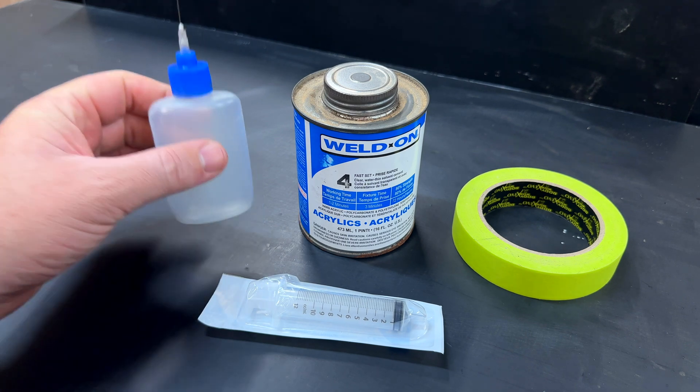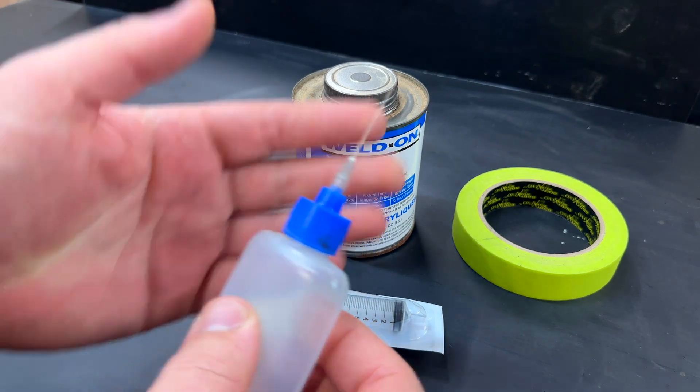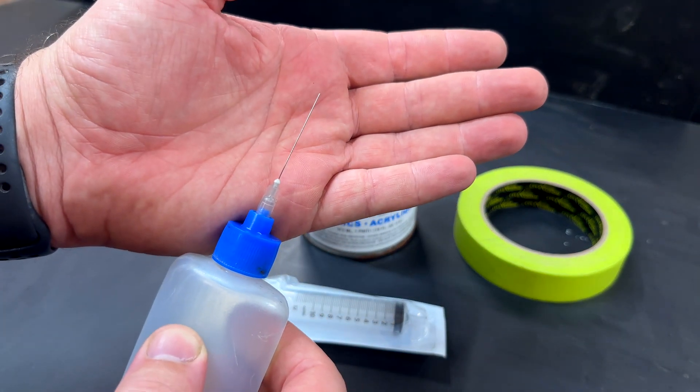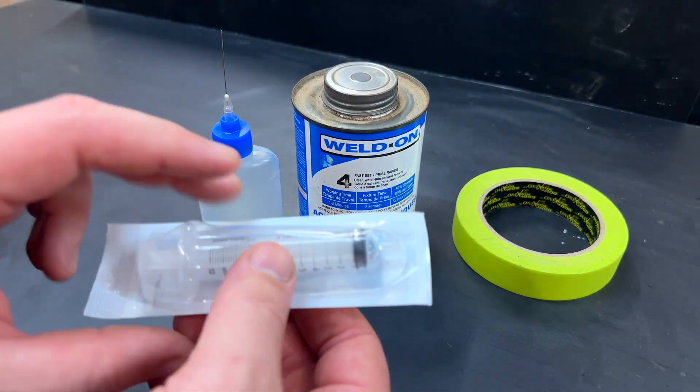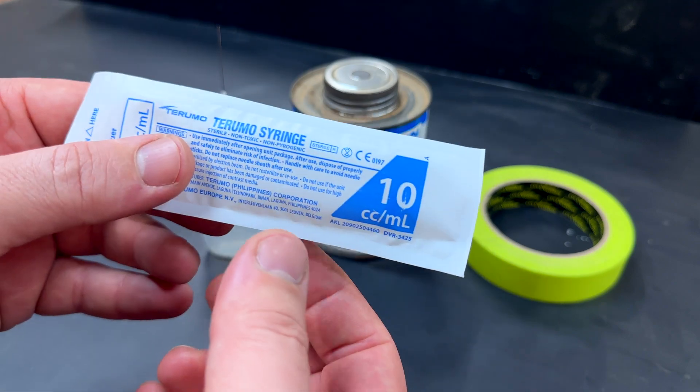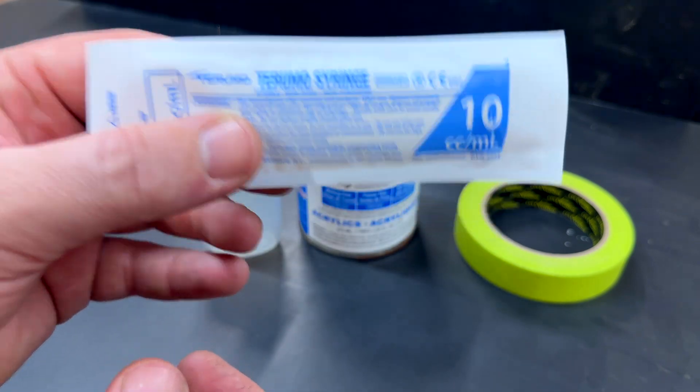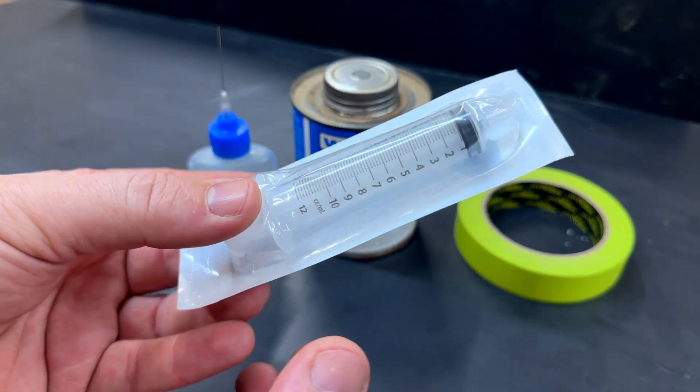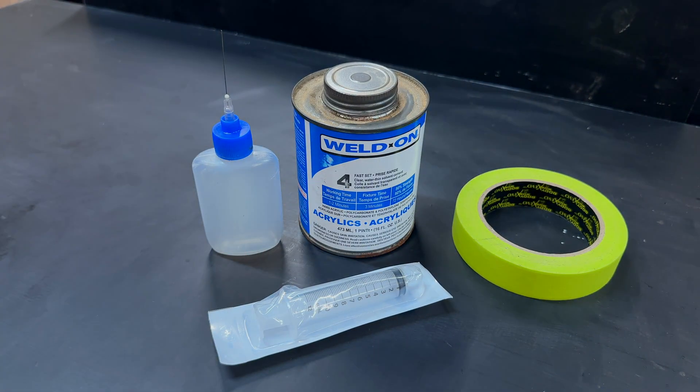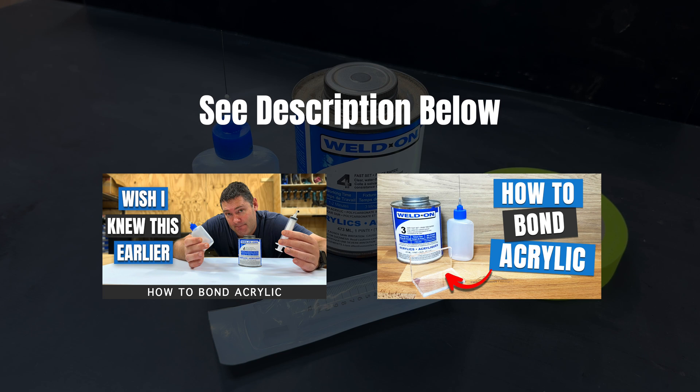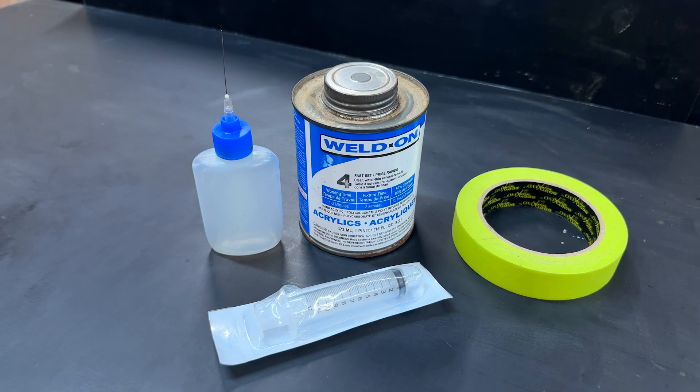Then you also need an applicator bottle to apply it and typically these come with a blunt needle like this. Not exactly my favorite method. I prefer using a syringe like this. Now these ones I get from my local pharmacy. Really cheap, 80 cents or something like that. So I got a whole bunch of these and I actually do cover both of these in detail and I'll link to those in the description below and at the end of this video, both the tips and some pros and cons to using both of these.